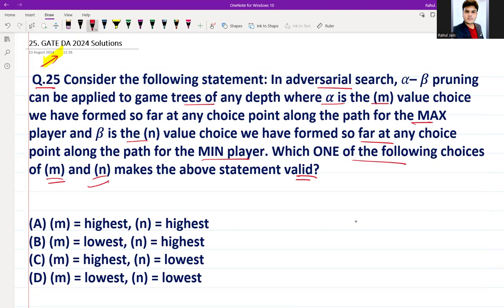Alpha represents the best or highest value that the max player can guarantee so far. It starts from minus infinity and increases as the search progresses.